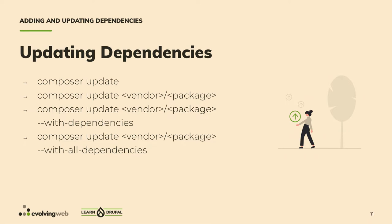To update dependencies, you can run composer update to update everything in your project that has a pending update. Or pass a list of specific packages to update only those. The --with-dependencies and --with-all-dependencies flags work the same as in composer require: --with-dependencies updates the package and its dependencies but won't touch dependencies listed in your root composer.json, while --with-all-dependencies will also update those.